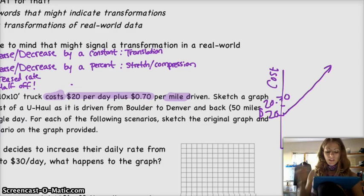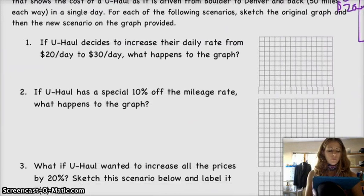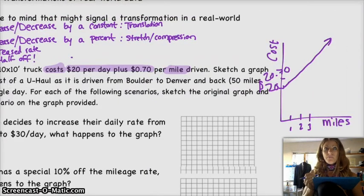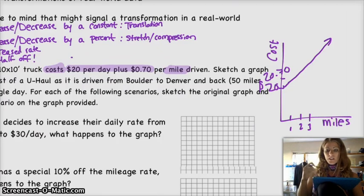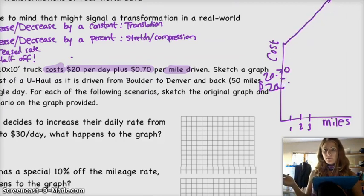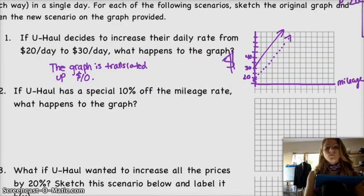So the next question says, if U-Haul decides to increase their daily rate from $20 to $30 a day, what happens to the graph? So you can just look at this graph, and basically if the mileage cost doesn't change, the graph doesn't change at all except it's shifted up from $20 all the way up to $30. You have the same rate increase, but you're starting at a new initial amount.